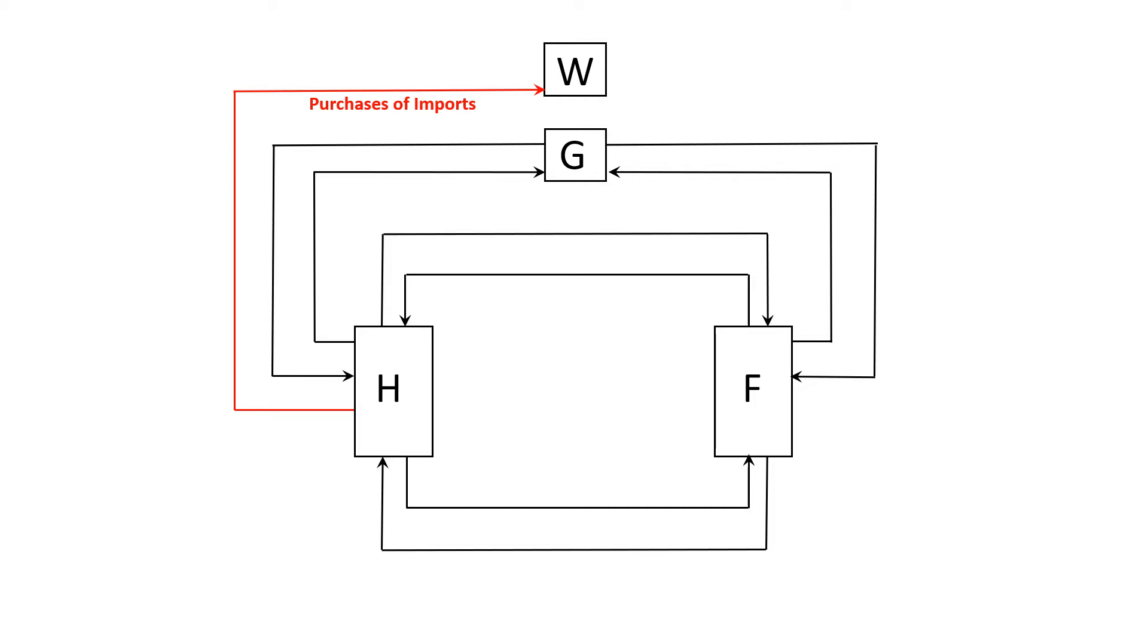Technically, firms also purchase goods and services from foreign countries as well. But in an effort to keep our model as simple and comprehensible as possible, we'll only show the households purchasing imports here. It's labeled in red because it shows a leakage of spending from the American economy, which would cause it to slow down.